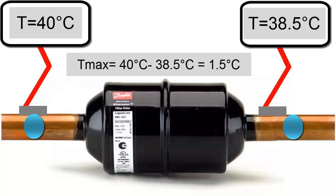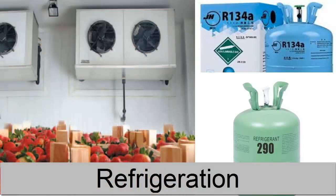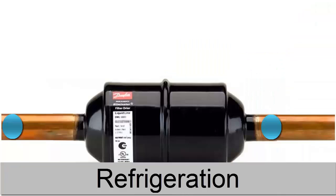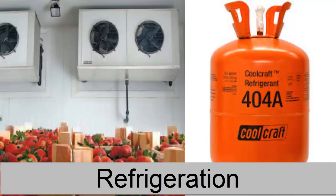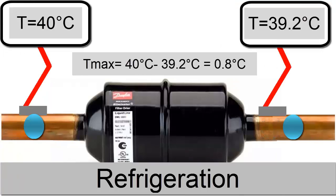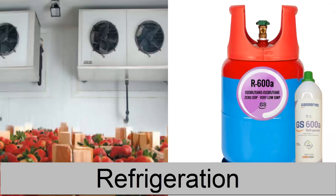For refrigeration with R-134A and R-290 gases, the temperature drop suggesting obstruction is 1 degree Celsius. With R-404A, the temperature drop is 0.8 degrees Celsius. And for R-600A, the temperature drop is 2 degrees Celsius.